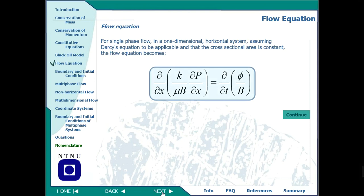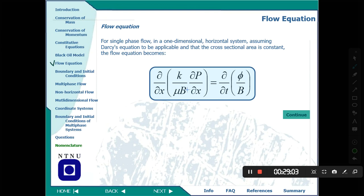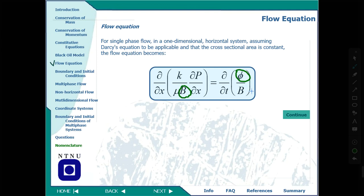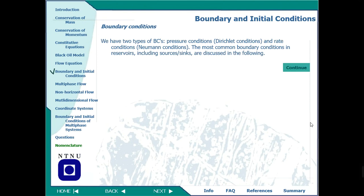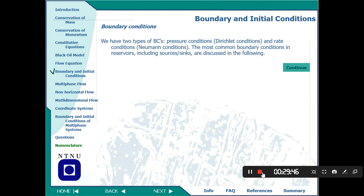The flow equation for the black oil model has three main parameters: formation volume factor, compressibility and porosity, and permeability. The equation includes the change in pressure with respect to distance and the change in porosity over formation volume factor with respect to time. This is the final flow equation used in reservoir simulators. That's all for today's lecture part one — we will continue in part two. If you have any questions, please feel free to email.